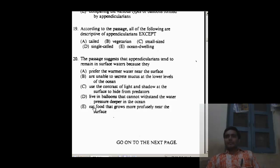Let's move to the 20th one. The passage suggests that appendicularians tend to remain on the surface water because: they prefer warmer water near the surface - okay, let's keep this for a while. They are unable to secrete mucus at lower level of ocean - no, it does not matter how lower they are, B goes out. Use the contrast of light and shadows - this is not told, C goes out. Lives in a balloon that cannot withstand the water pressure - they never talked about pressure, D goes out.